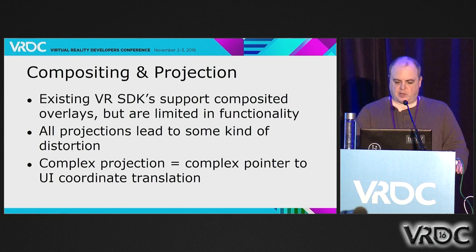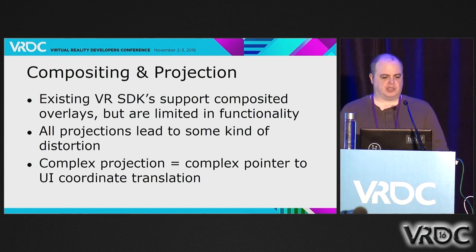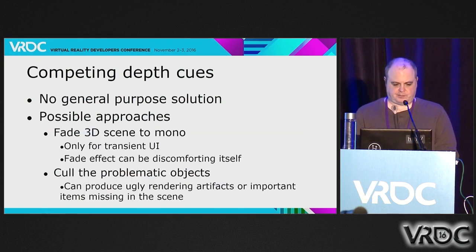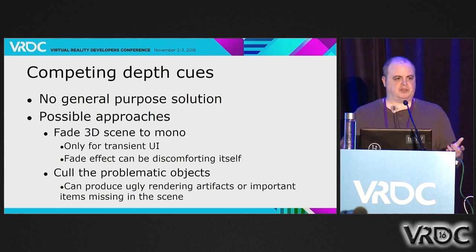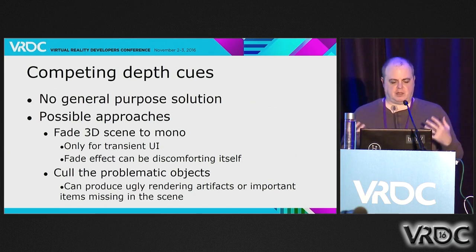OpenVR does help in that they actually have an API that says: given this ray and direction, what is the XY coordinate on this overlay surface that I'm hitting? For the issue of occlusion versus depth cues, there isn't really a general purpose solution. If you're using a transient UI, you can optionally fade the 3D environment to a mono environment while the UI is open, which eliminates any potential for competing depth cues. But the fade effect itself, whether immediate or over a small amount of time, can be discomforting.